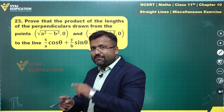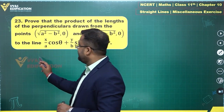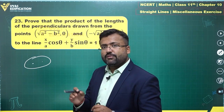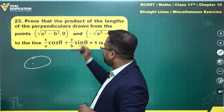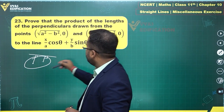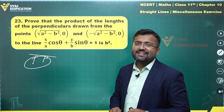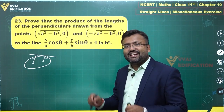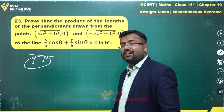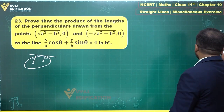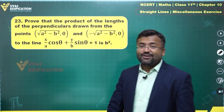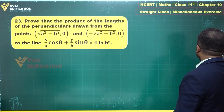Otherwise you can skip this explanation of conic sections. For an ellipse, for the standard ellipse x²/a² + y²/b² = 1, these two points are the foci, and this is the equation of any tangent. The product of lengths of perpendiculars from the foci to the tangent is equal to the square of the semi-minor axis — that's a key property of the ellipse, and questions have been asked in competitive exams based on this property.